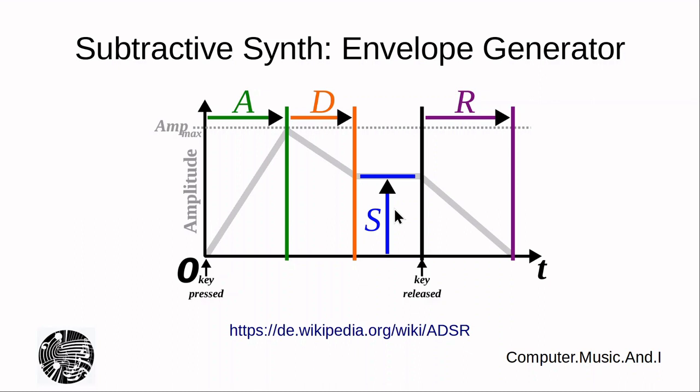Alright. Now, these envelope generators take a very important part within synthesis. And there are a number of different approaches to it, but a very common one is the so-called ADSR envelope generator. As you can see here, it's a four-phase generator. You've got an attack phase, you've got a decay phase, you've got a sustain phase, and you've got a release phase. And the attack time basically defines how fast the synthesizer is reacting to a keystroke.